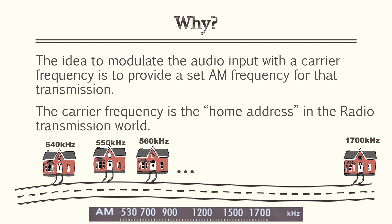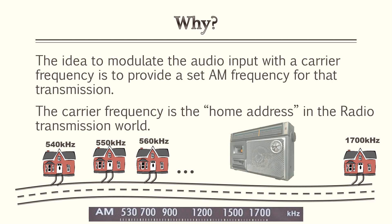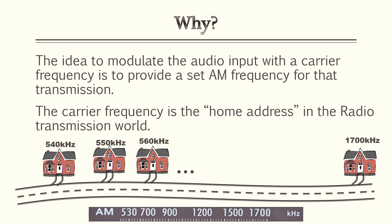A more relatable example is an older car radio. Looking at the illustration at the bottom of the screen, it starts at 530 kilohertz all the way up to 1700 kilohertz. When you adjust the tuner, a needle moves from 540 up to 1700 — that's how you change stations. What you're actually adjusting is the carrier frequency, allowing you to tune to a different carrier frequency to obtain the station or audio you're looking for.